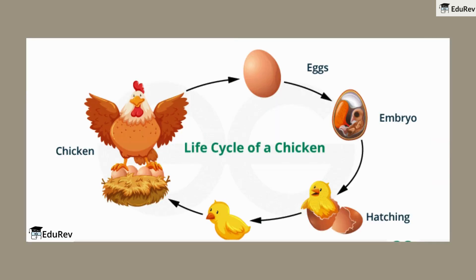Here's something fun — the life cycle of a chicken. It starts as an egg, then the egg hatches into a baby chick. The chick grows into an adult chicken, which then lays more eggs, and the cycle continues.